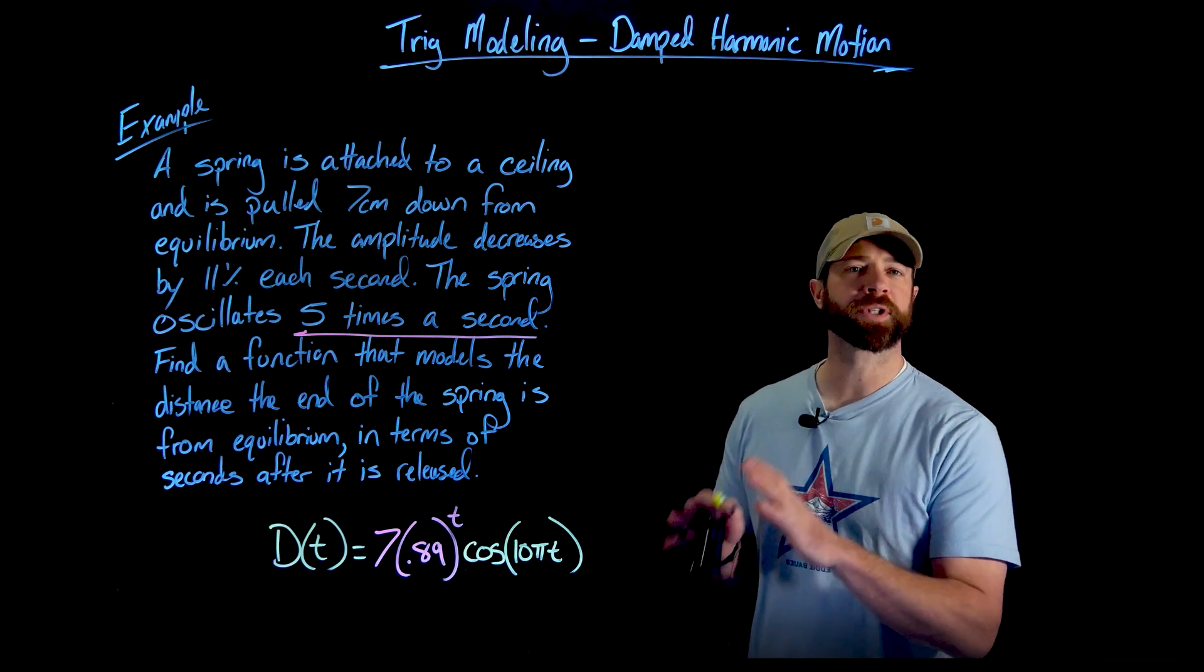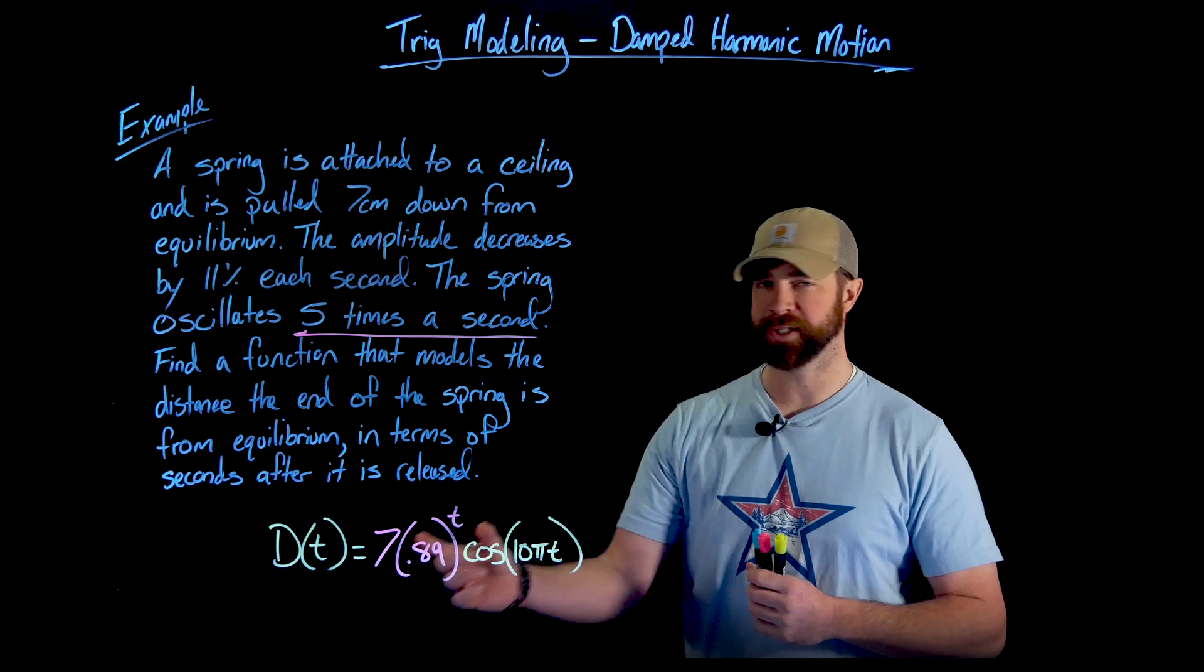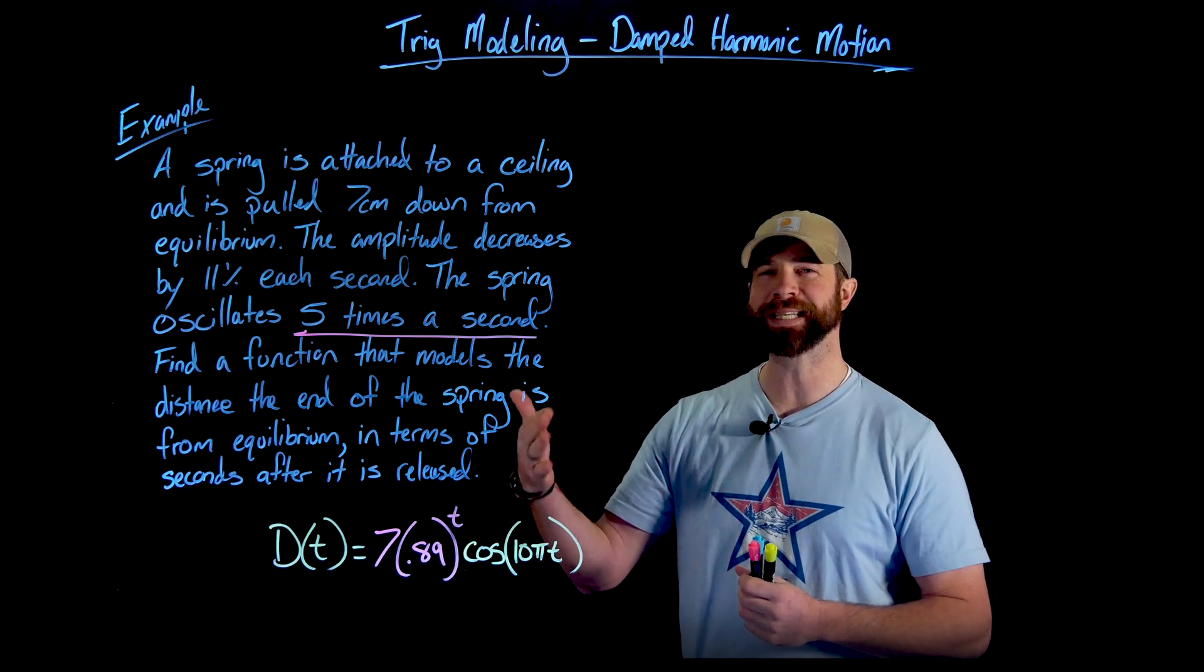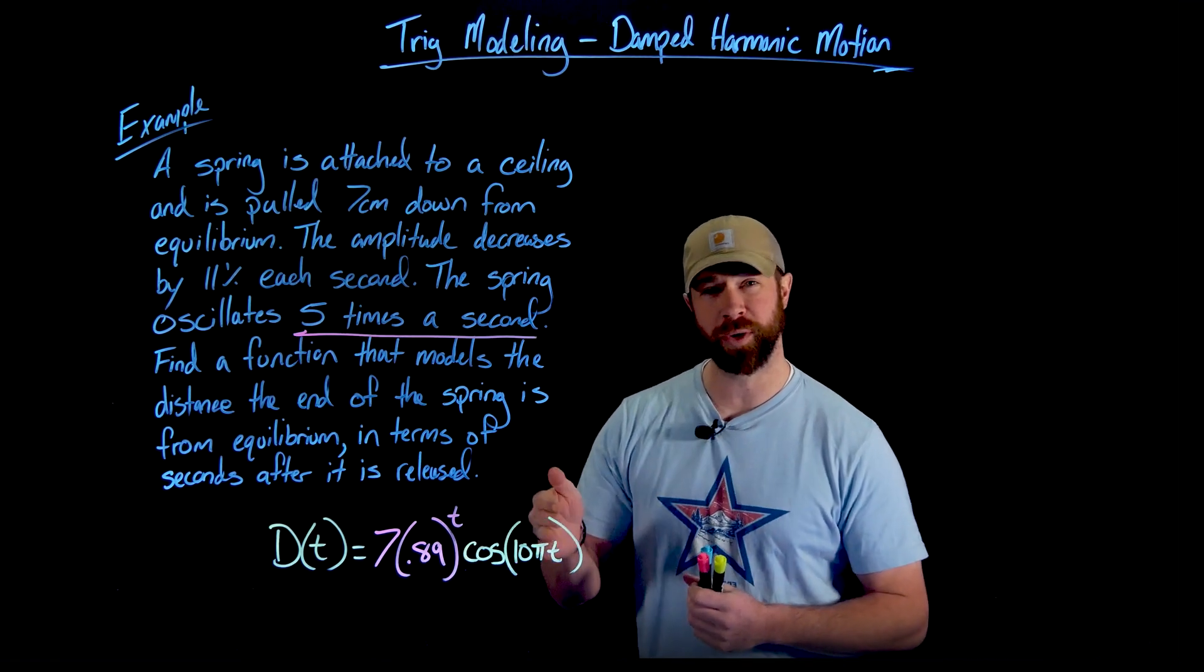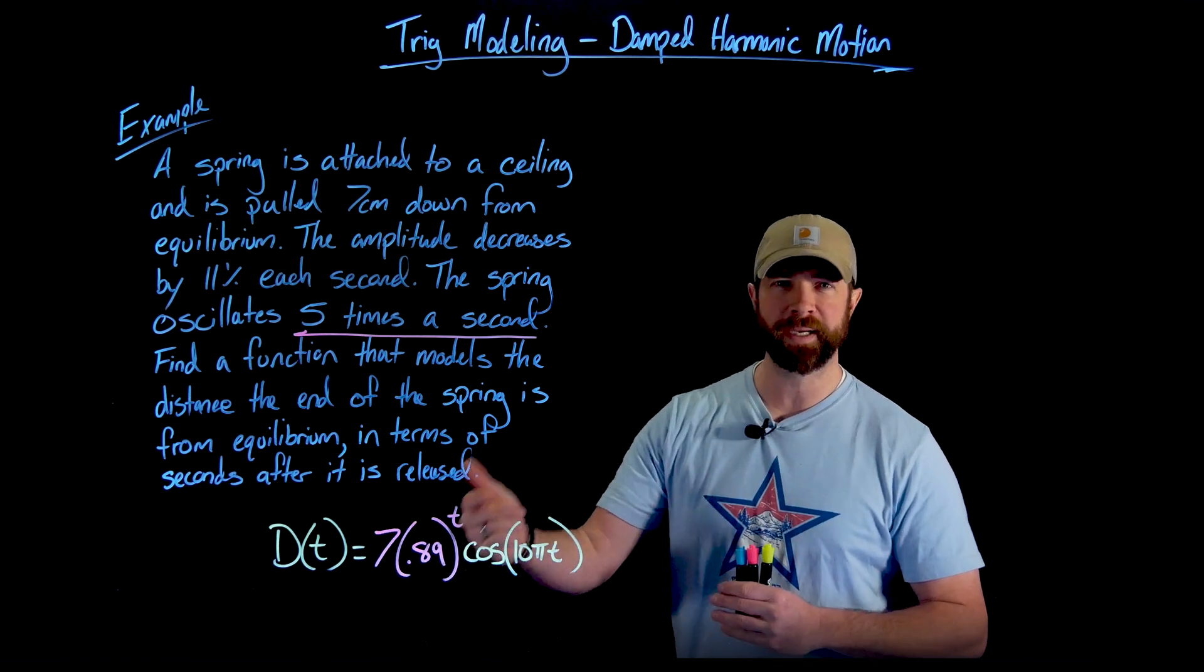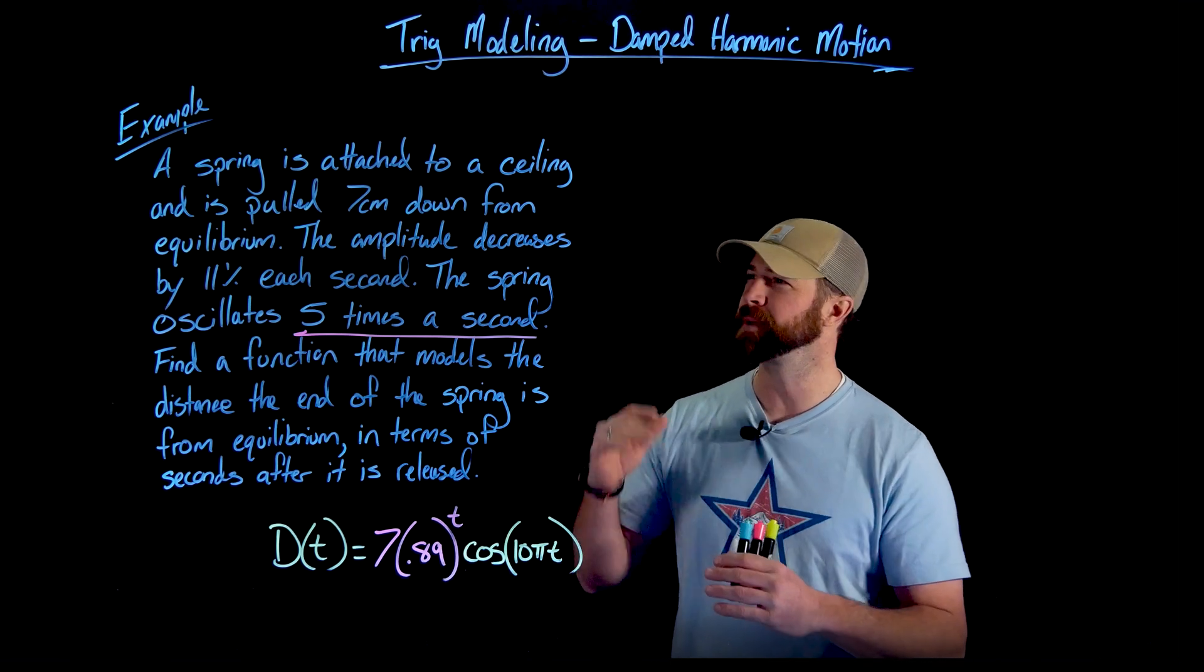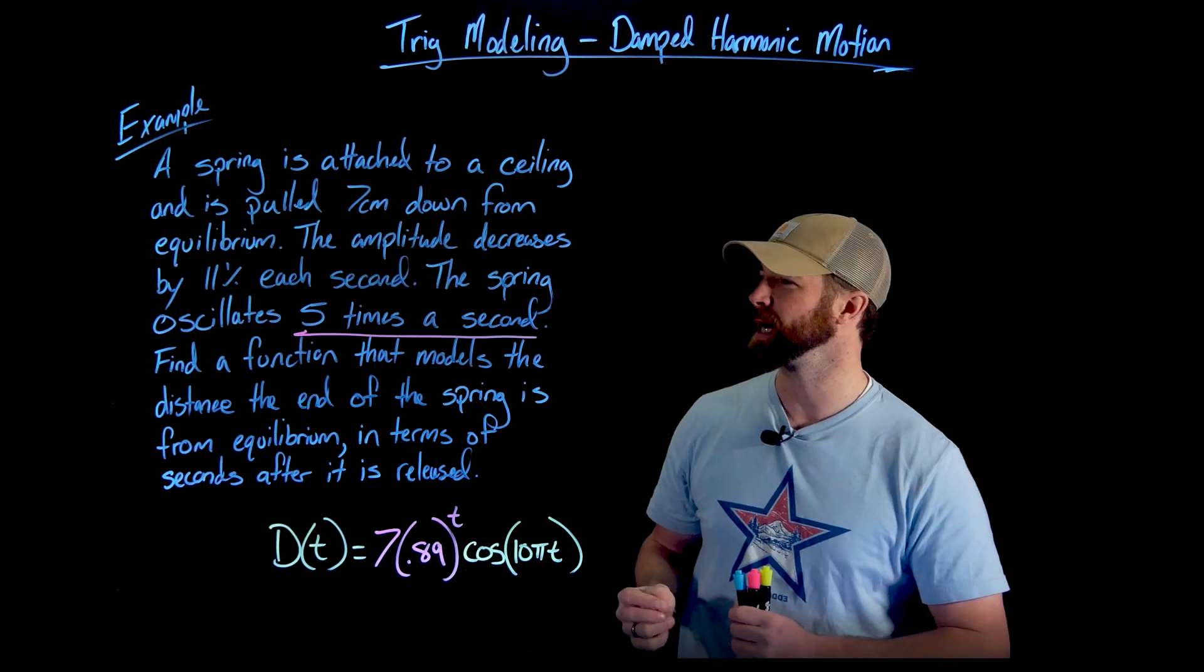And as a quick debrief we'll just go back through all the components of this function right here. First of all we have this changing amplitude, this exponential that starts at seven and then every second we're losing 11 percent or in other words retaining 89 percent of that amplitude. In this right here we're starting using cosine because that means we're starting at our maximum distance. Again I could throw a negative in here if we were starting at a minimum distance, that's the only change I would do. I would use a sine if we were starting at the equilibrium but again as we said here we're starting with this pulled spring being pulled down right here.